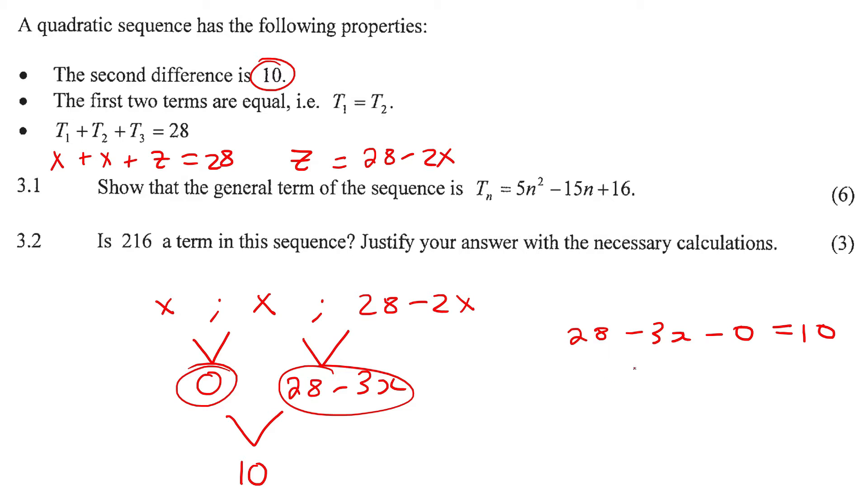You would take this one minus this one, so we can say 28 minus 3x take away zero, and we know that the answer should be 10. If you take the 3x to this side and the 10 to this side, then 3x would be 18, so x is 6.